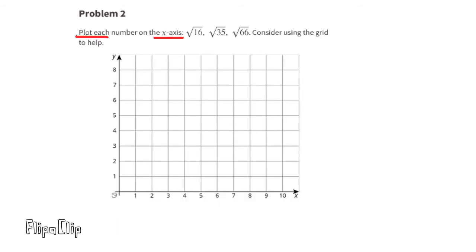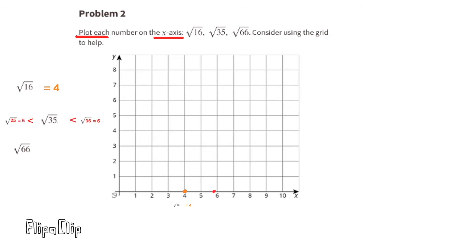Problem number 2: plot each number on the x-axis, using the grid to help. The square root of 16 is easy — since 4 times 4 is 16, the square root of 16 is 4, so we plot the point directly on 4 of the x-axis. For the square root of 35, I know 5 times 5 is 25 and 6 times 6 is 36, so the square root of 35 is between 5 and 6. Since 35 is very close to 36, this number is just less than 6, so we plot the point just less than 6 on the x-axis.